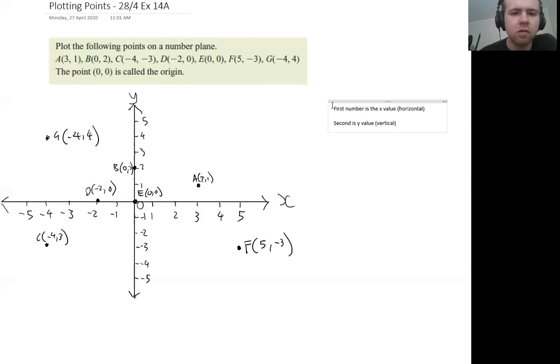Always remember that when we're plotting points: up is the positive and right is the positive for x. If we go left, that's the negative values for x, and if we go down, it's the negative values for y.